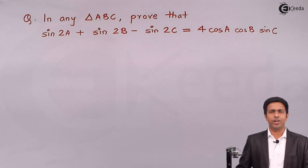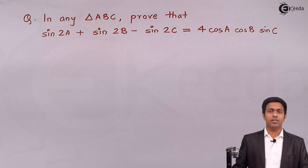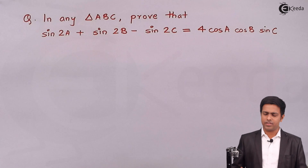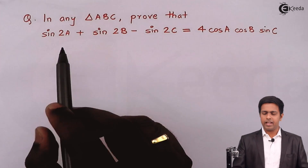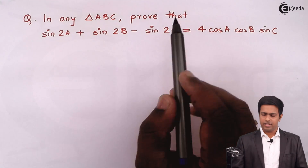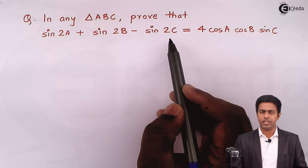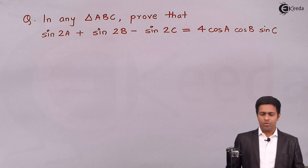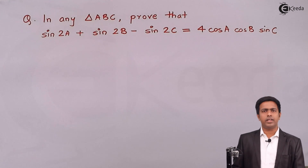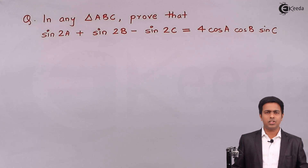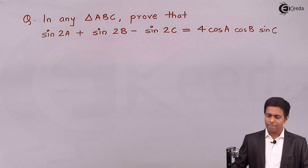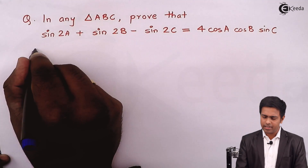Hello students. In this video we are going to learn a problem based on angles of triangle. The problem is: in any triangle ABC, we have to prove that sin2A plus sin2B minus sin2C is equal to 4 times cosA cosB sinC. To solve this, we will start with the left hand side and use properties and results based on angles of triangle.